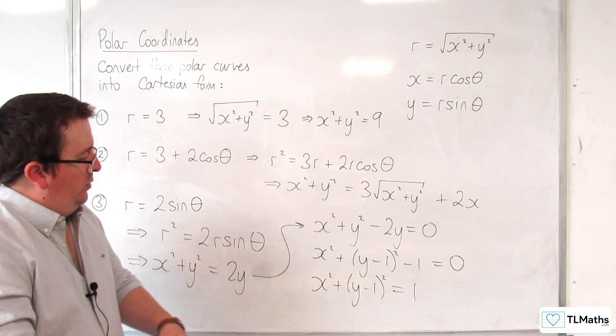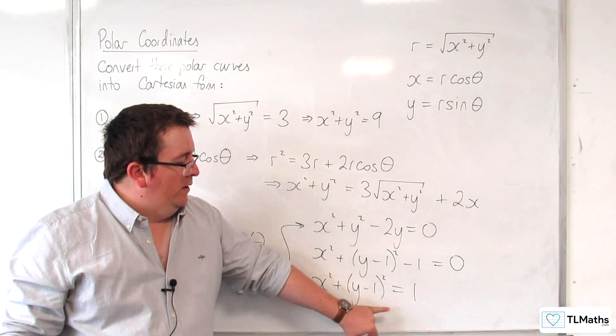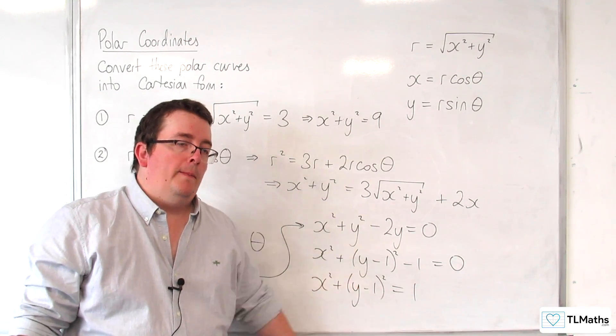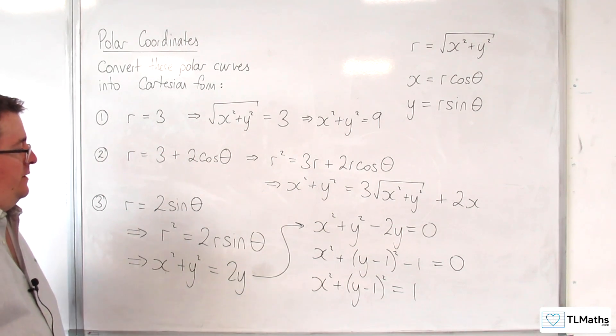And so we have a circle centered at 0, 1, with radius 1. That's what that defines.